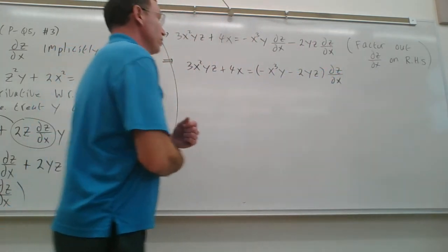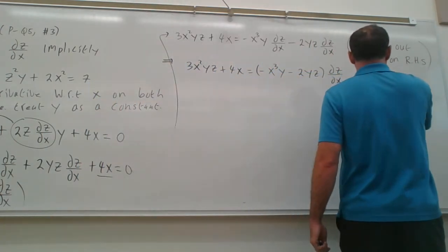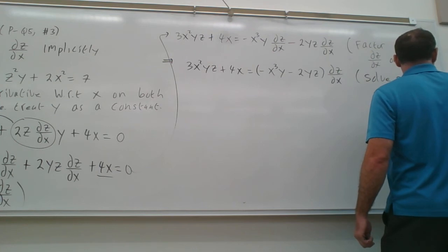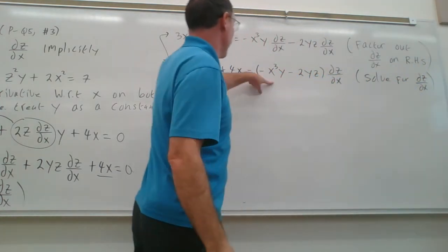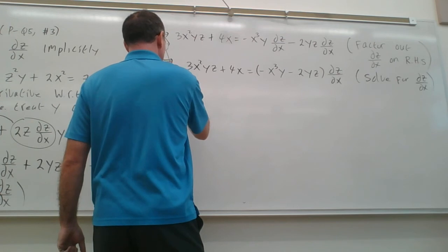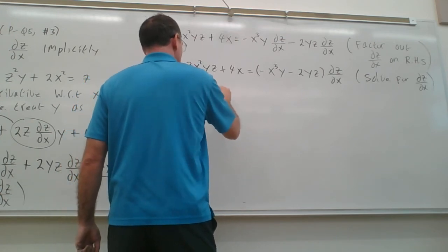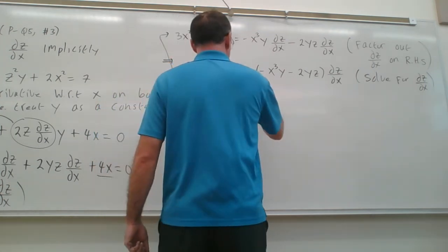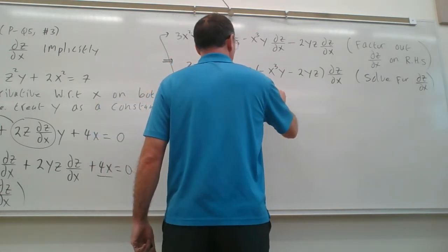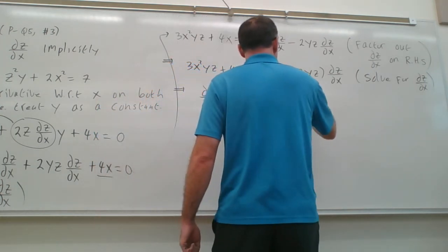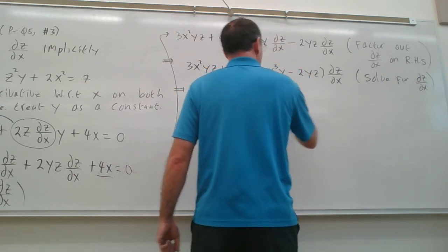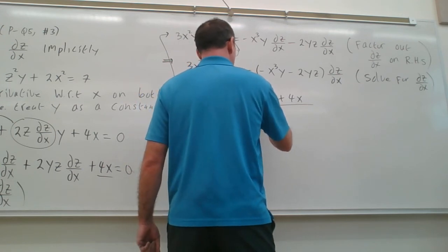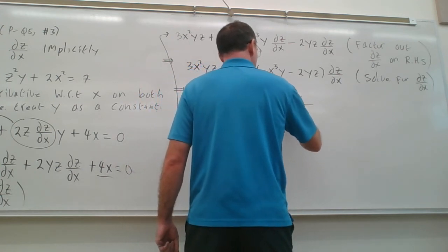And then solve for partial z with respect to x. So divide by this guy on both sides. So doing that, we'll get partial z with respect to x equals 3x²yz + 4x divided by, we can pull that minus sign out in front there, minus x³y plus 2yz.